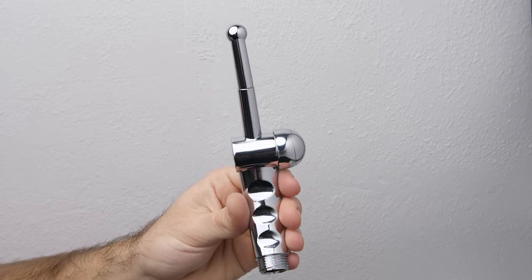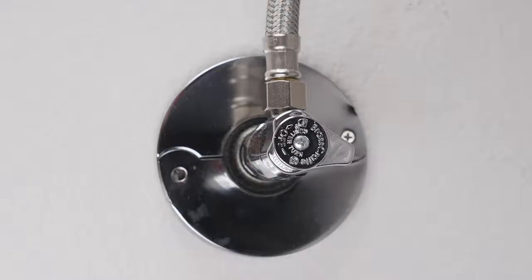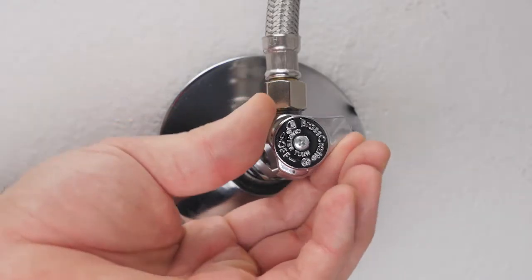Connect the bidet spray head to the open end of the bidet hose. Turn on the water supply and check for leaks.